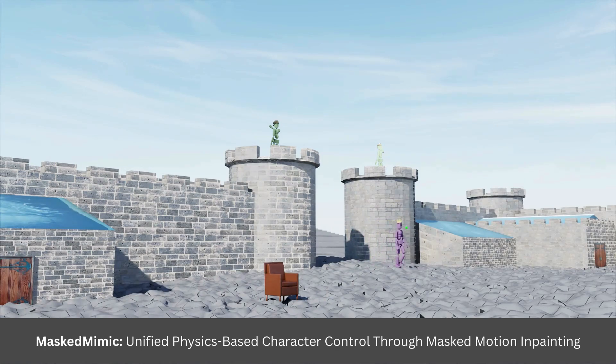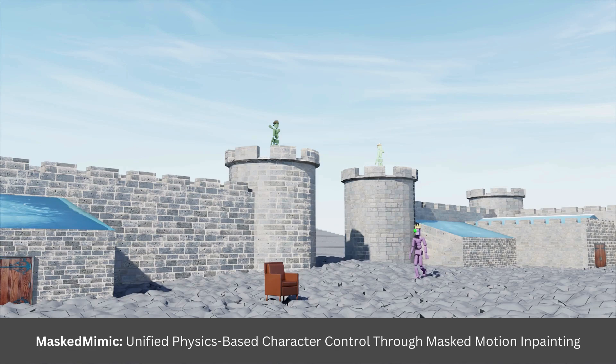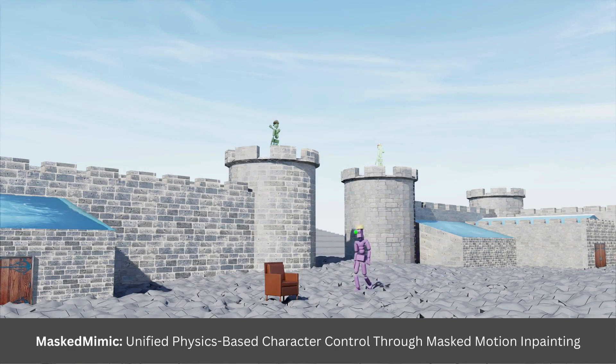Next, the user can direct me to sit on this throne by first specifying a target object for me to interact with. I can then generate natural motions for interacting with that object.